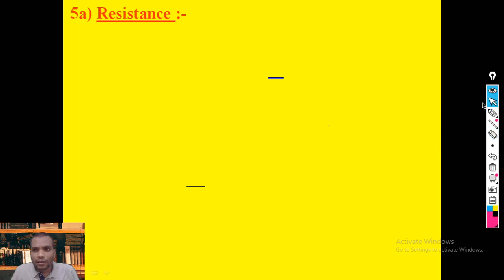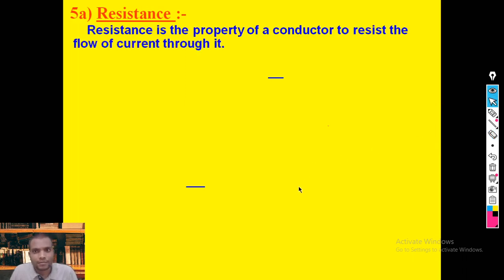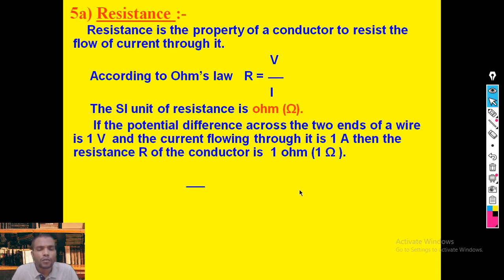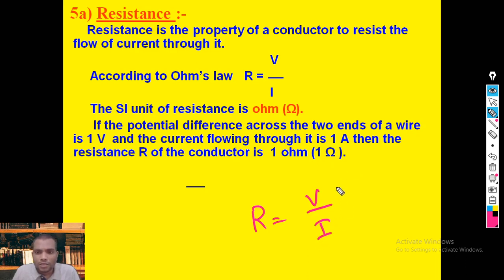Finally, resistance is the property of a conductor to resist the flow of current through it. According to Ohm's law, R = V / I. The SI unit of resistance is Ohm. One Ohm is defined as follows: if I apply one volt of potential difference to a circuit and one ampere of current flows, then the circuit offers a resistance of one Ohm.